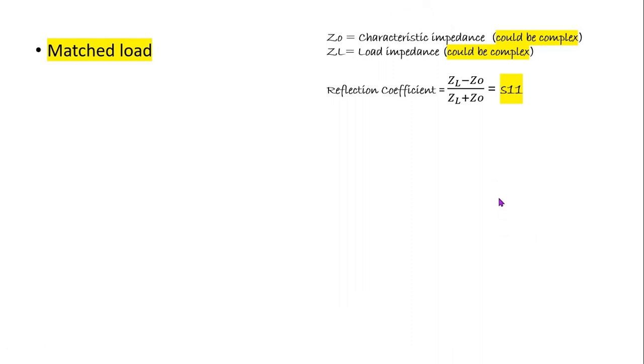We have ZL equal to Z naught. So if I put ZL equal Z naught, what you will get? S11 equal to 0, perfect. And I have been ignoring this term in my previous videos, but S11 could be a complex value also.